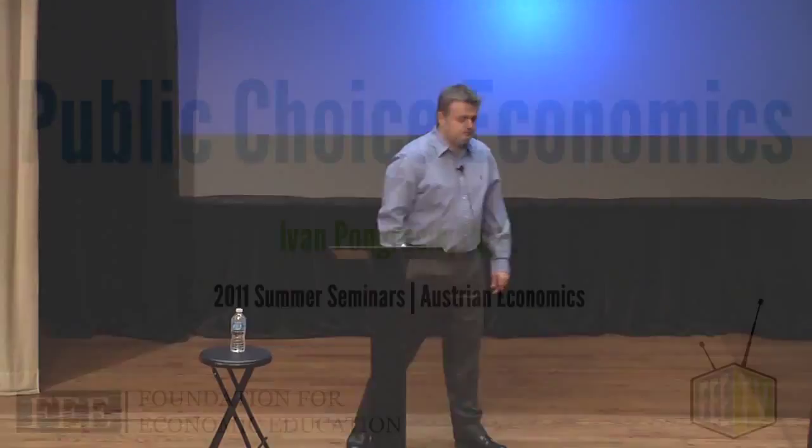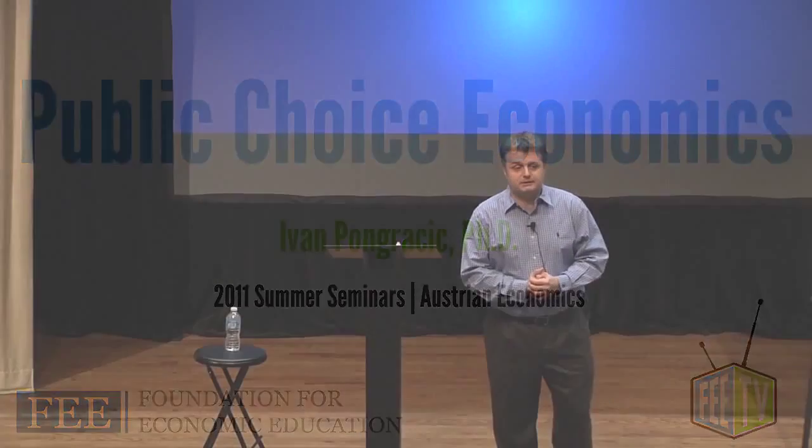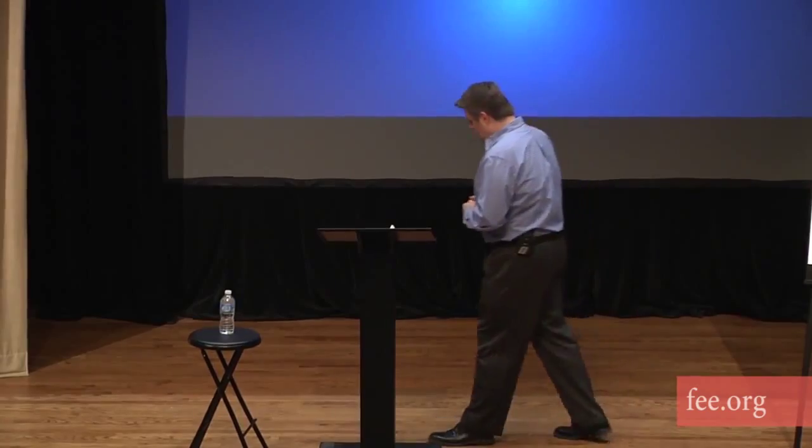In this lecture I'm going to talk about a field not usually associated with Austrian economics. The Austrians refer to public choice economists as fellow travelers — people who share many things in common with the Austrian worldview. Certainly in terms of conclusions we draw about the political organization of society, they're on a very similar page, and many Austrians today largely embrace what public choice economists say.